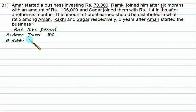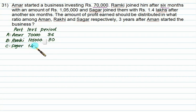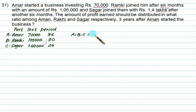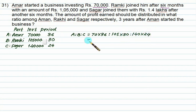B represents Ramke who invested 1,05,000. He joined 6 months later, so his period is 36 minus 6 = 30 months. C represents Sagar with 1,40,000 investment, joining after another 6 months, so his period is 36 minus 12 = 24 months. They share profit in the ratio: 70×36 : 105×30 : 140×24, which simplifies to 12:15:16.